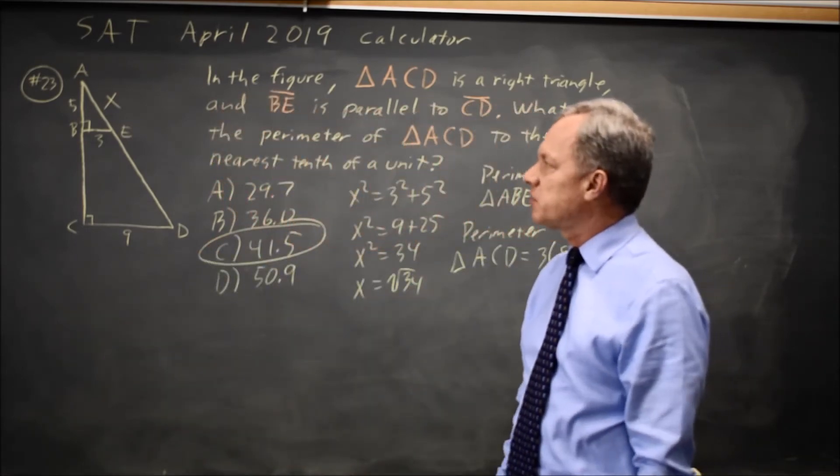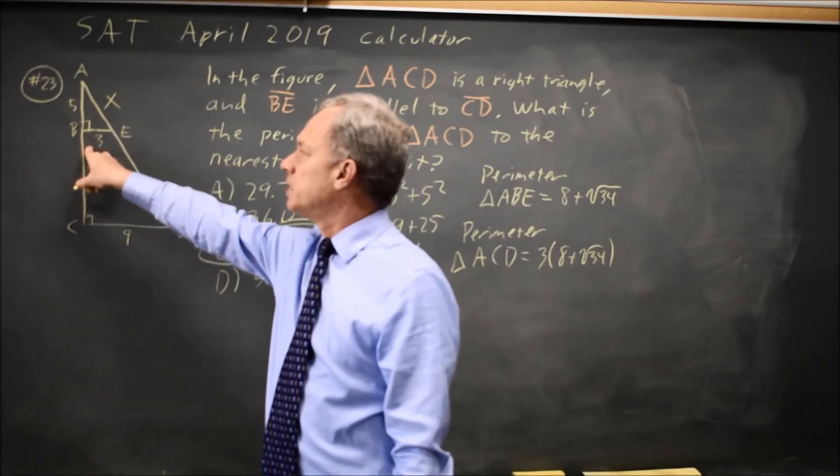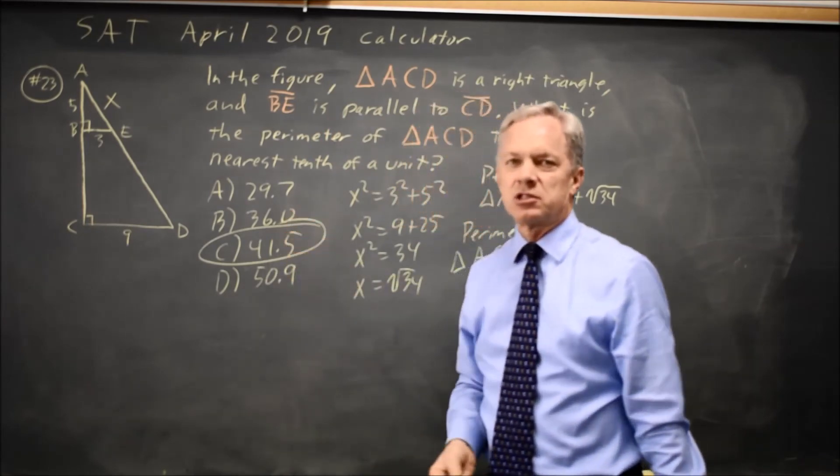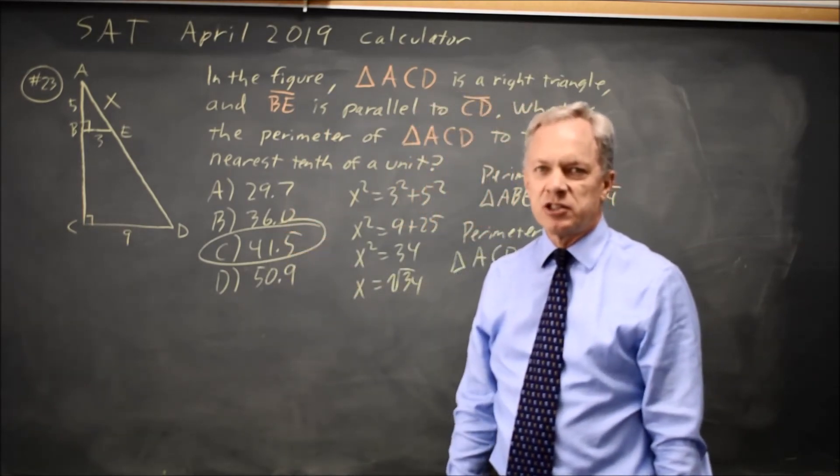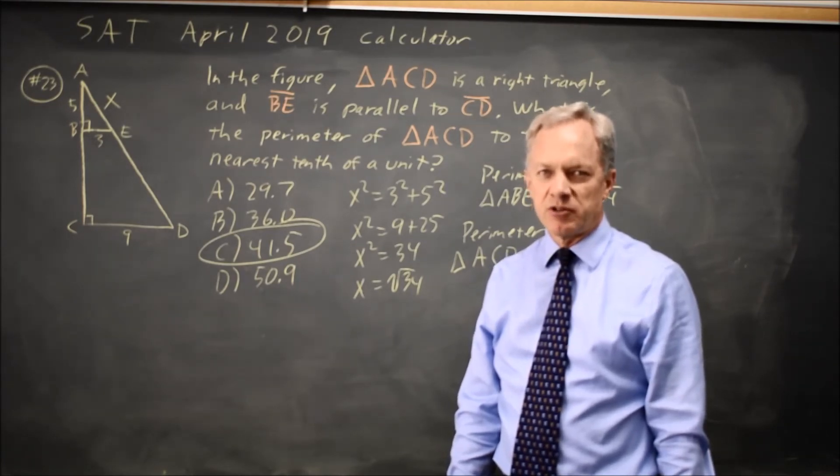If you take the bait and assume this is a 3-4-5 triangle, the perimeter is 12, and 3 times that would be 36, which is choice B. As they often do, College Board is giving you every opportunity to make a careless error by failing to read the question carefully.